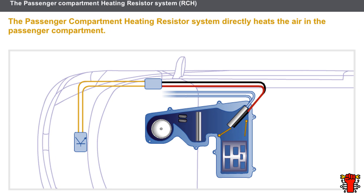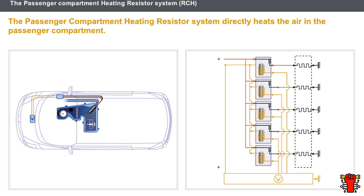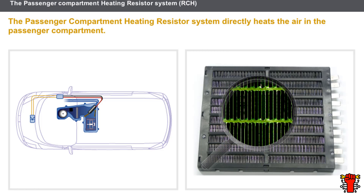Let us now look at the passenger compartment heating resistor system, or RCH. The RCH system directly heats the air in the passenger compartment. This system is designed for the thermal comfort of the passengers and is mainly used for diesel engines. Additional passenger compartment heating is located in the heater unit downstream of the heater matrix. The RCH system is directly controlled by the air conditioning computer; however, control of the RCH system may also be carried out via the UCH. The RCH system is mainly comprised of an electric radiator and several relays; the electric heating resistors are positive temperature coefficient type ceramic plates, surrounded by fins and assembled in independent steps, with between 3 and 5 steps depending on the power to be supplied.